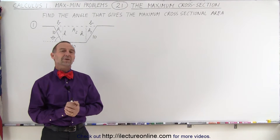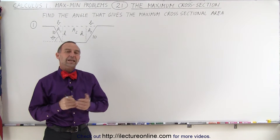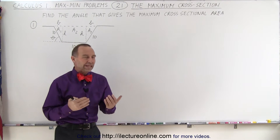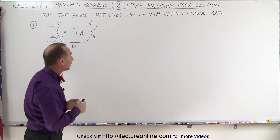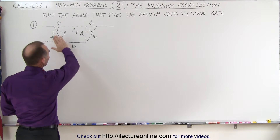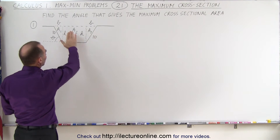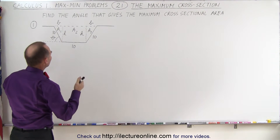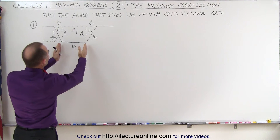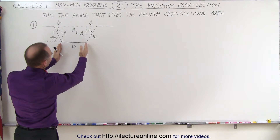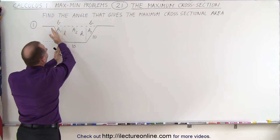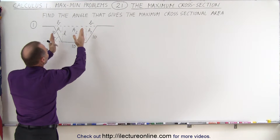Welcome to ElectronLine. Our next problem deals with a drainage canal. We're trying to find the maximum cross-section of this drainage canal. The specifics are that the width at the bottom is 10 feet, and each of the sides also have length 10 feet.